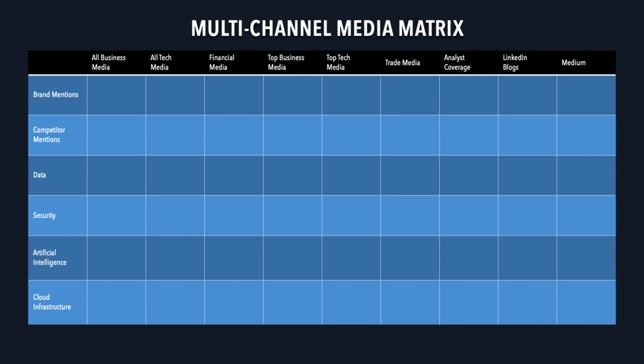Along the top, you have specific media channels. I want to spend some time talking about these because this is where you can start to see unique insights and coverage. All business media is pretty self-explanatory — this is Forbes, Business Insider, Bloomberg, the Wall Street Journal. And all tech media outlets are pretty much the same: The Verge, TechCrunch, VentureBeat, Gizmodo, and ReadWrite.